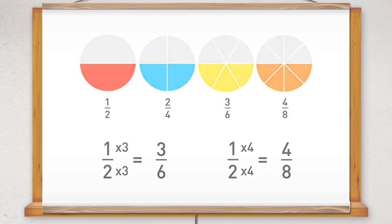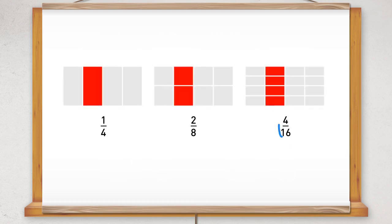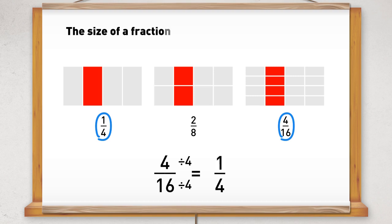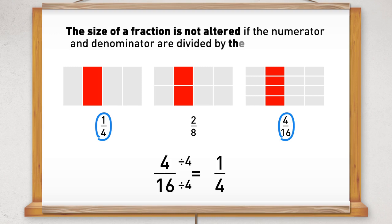Look again at the rectangles and compare the four sixteenths with the one quarter. We know from the diagram that these two fractions are the same size. By looking at the numbers, if we divide the four by four, we get one. If we also divide the sixteen by four, we get four. So this shows that the size of the fraction is not altered if the numerator and the denominator are divided by the same number.